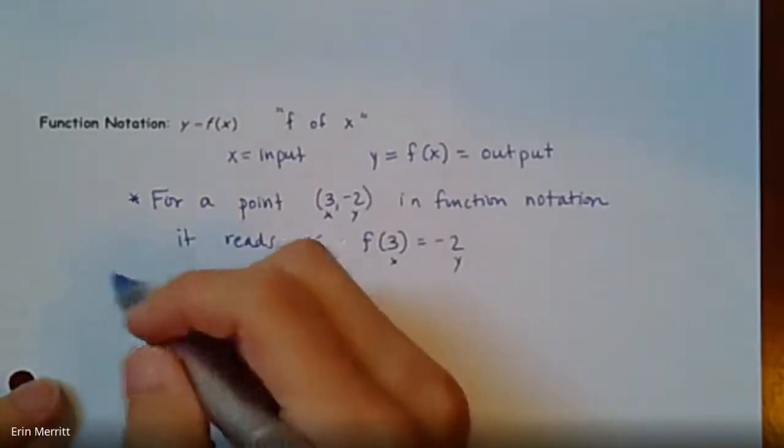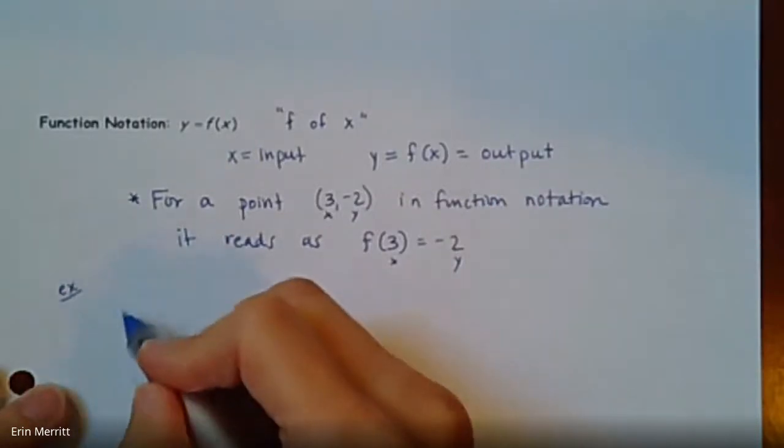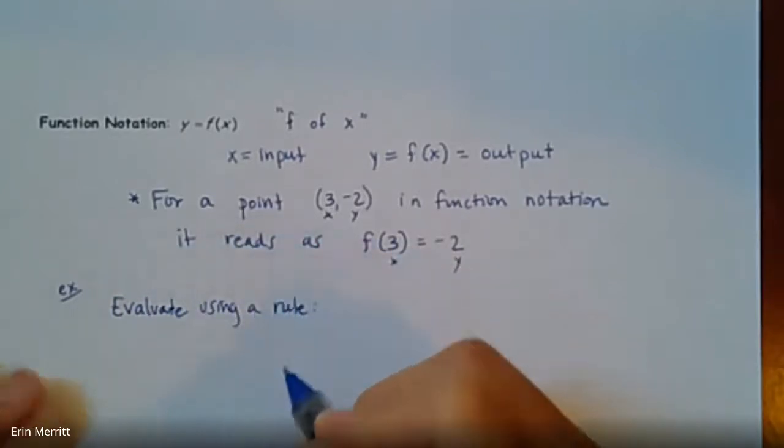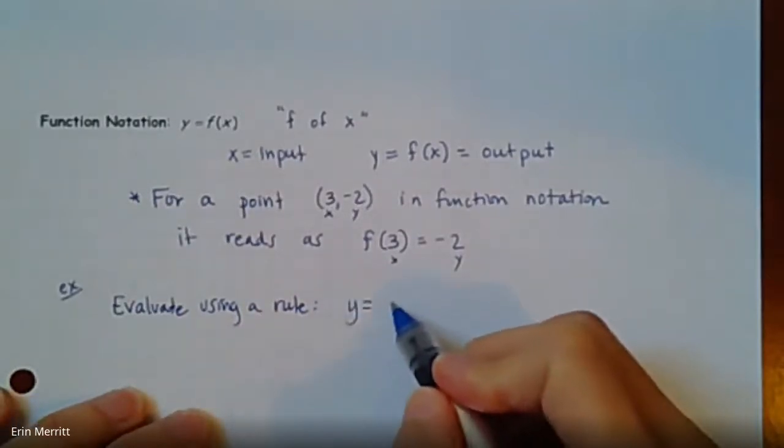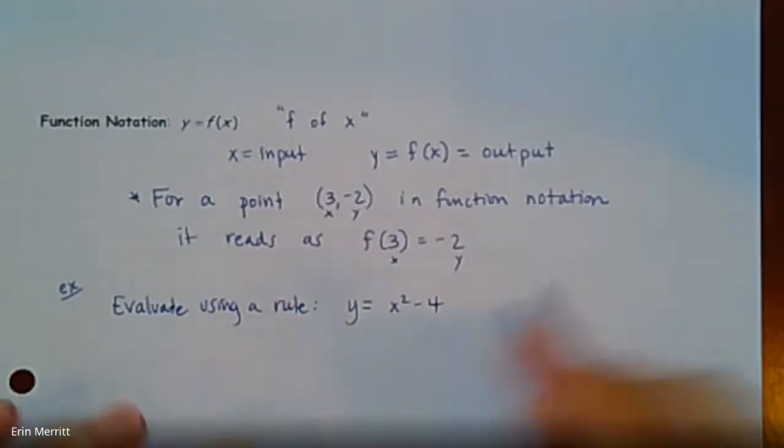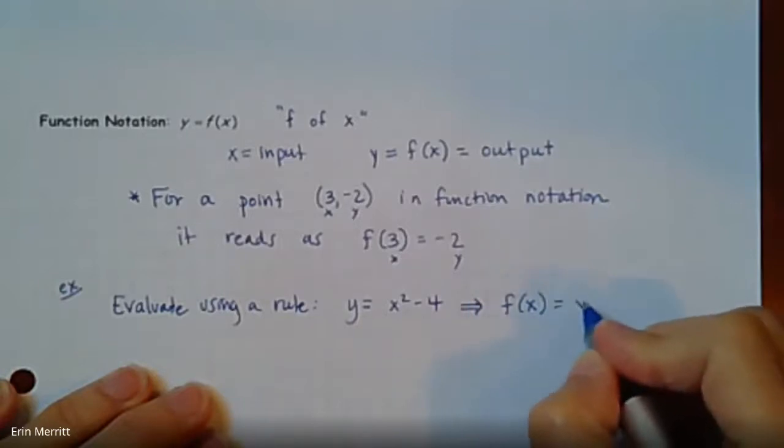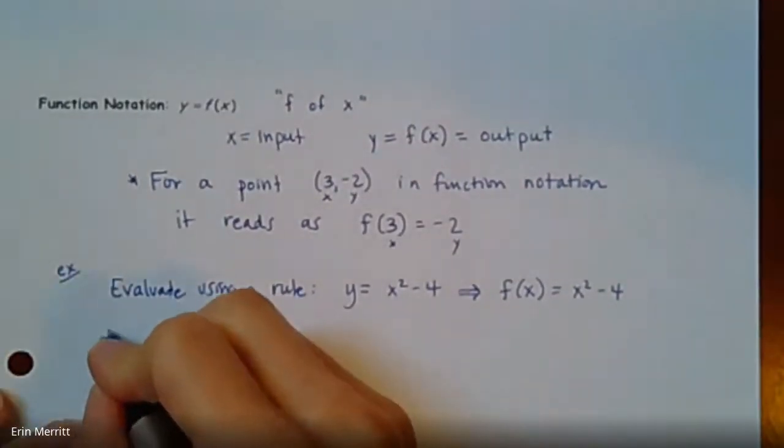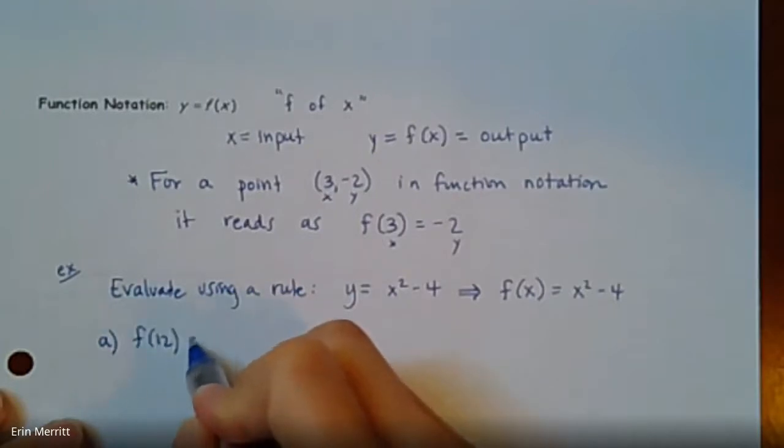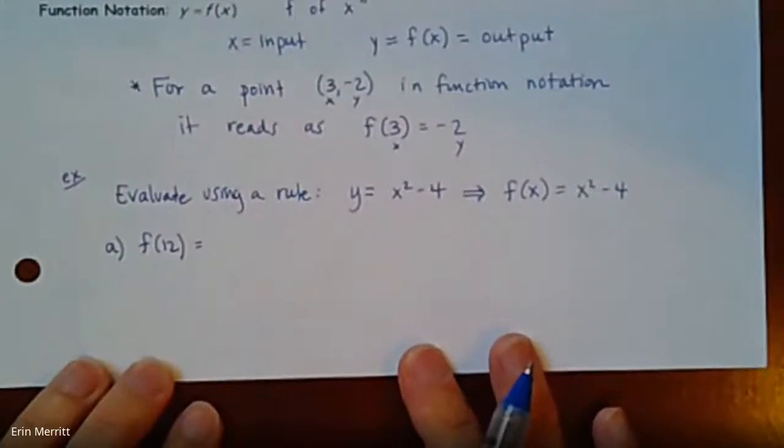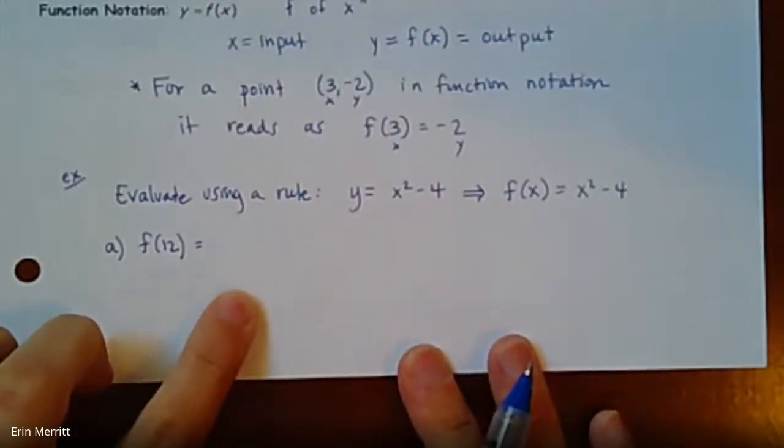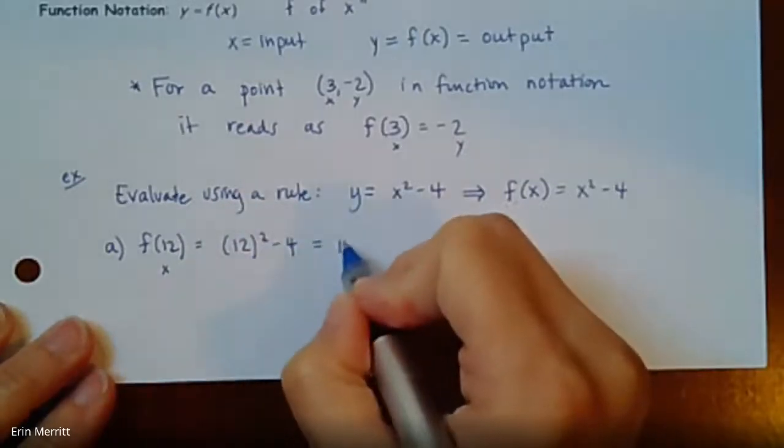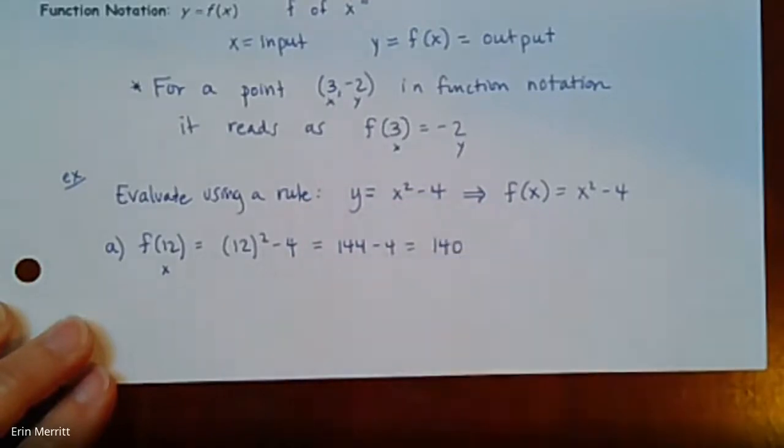So let's do some practice. Let's give ourselves an example. Let's evaluate using a rule. So if I want to use Y equals X squared minus four, let's write it with that function notation. This would just look like F of X equals X squared minus four. So we're just giving ourselves an example to work with. Those both mean the same thing. So now when I say, for part A, evaluate F of 12, in that tiny little notation, I'm giving you direction to plug in X equals 12 and tell me what number comes out. So let's do it. If we put in 12, square it, that should be your answer right there: 144 - 4 = 140.